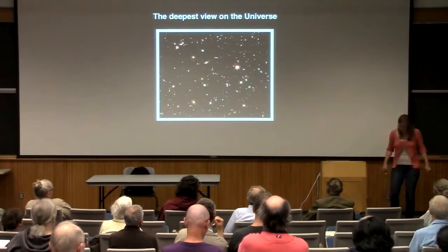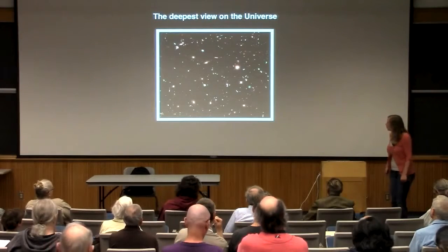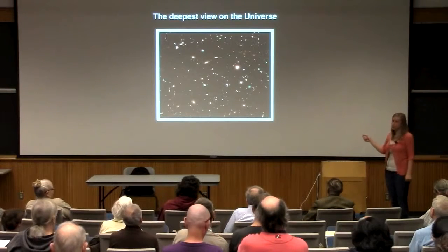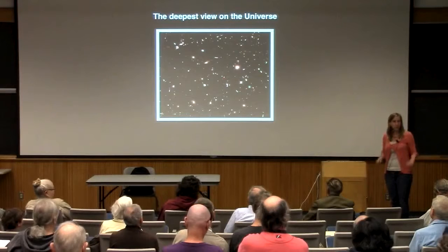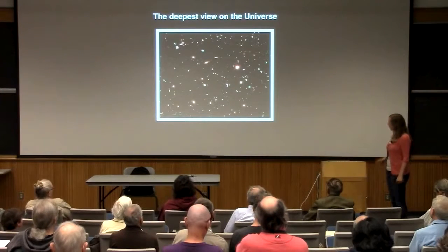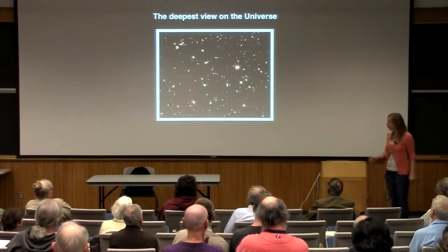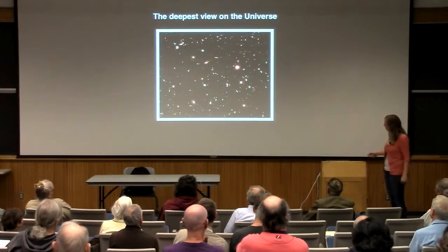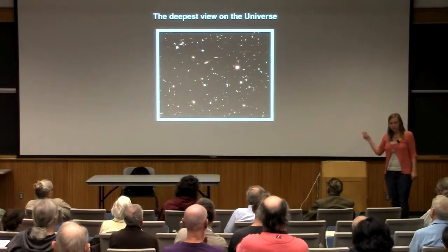This is one of the deepest views of the universe — the Hubble ultra deep field. If you zoom in with better resolution, you would see that every little tiny blob here is actually a pretty galaxy. Almost everything you see here is a galaxy, not a star. I think there are only two stars in this field — all these tiny blobs are galaxies.